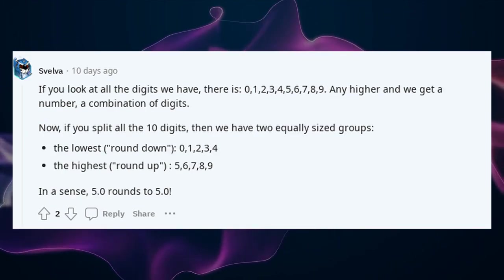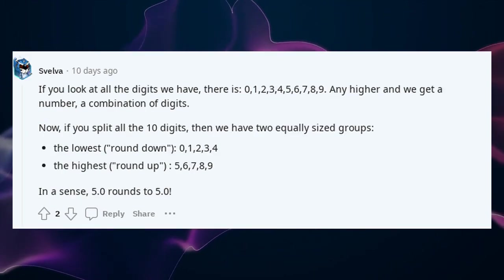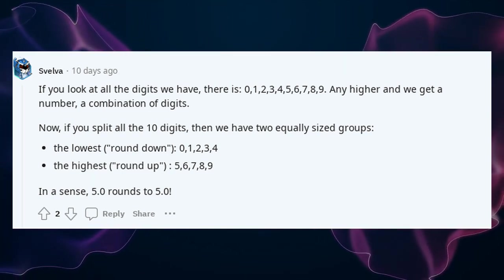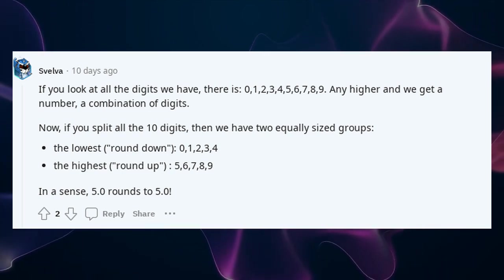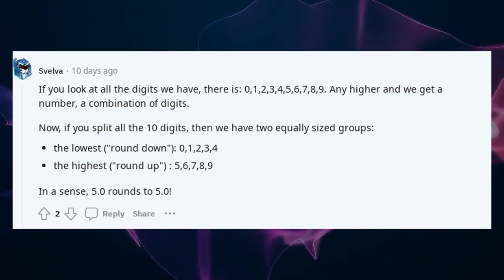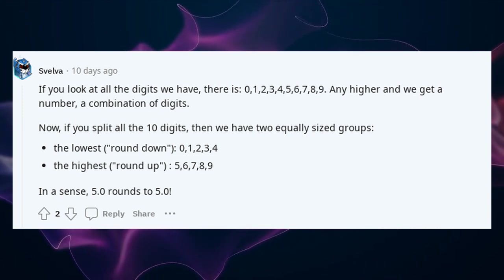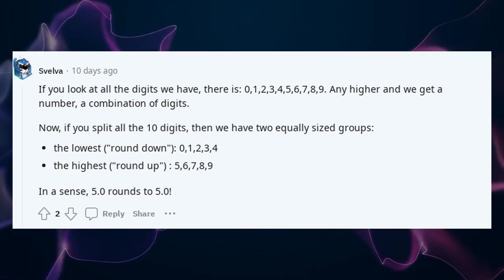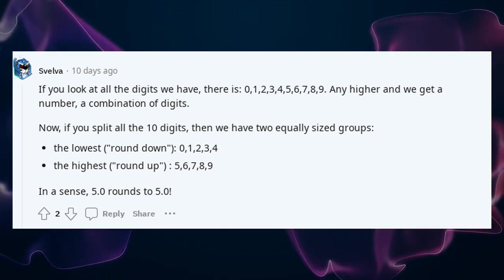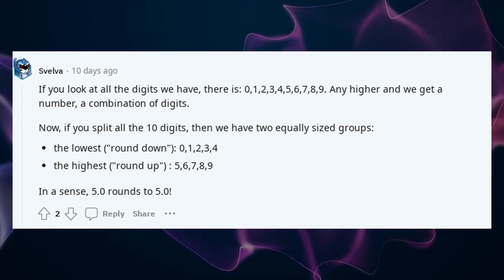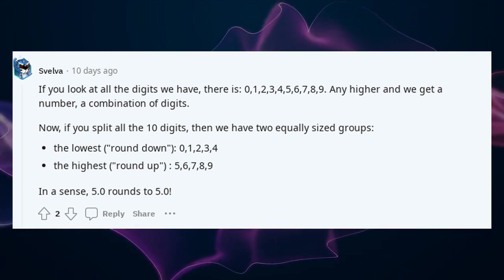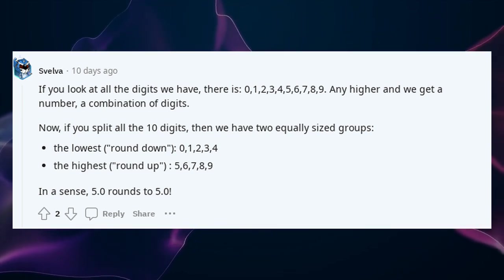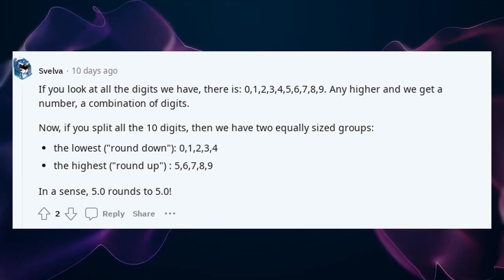If you look at all the digits we have — 0, 1, 2, 3, 4, 5, 6, 7, 8, 9 — any higher and we get a combination of digits. If you split all 10 digits into two equally sized groups, the lowest round down (0, 1, 2, 3, 4) and the highest round up (5, 6, 7, 8, 9). In a sense, 5.0 rounds to 5.0.